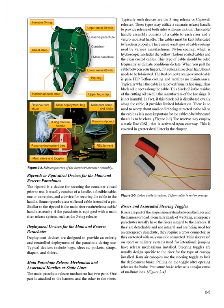Ripcords or equivalent devices. The ripcord is a device for securing the container closed prior to use. It usually consists of a handle, a flexible cable, one or more pins, and a device for securing the cable to the handle. Some ripcords use a stiffened cable instead of a pin. Similar to the ripcord is the main riser retained/release cable/handle assembly if the parachute is equipped with a main riser release system, such as the three-ring release. Deployment devices are designed to provide an orderly and controlled deployment of the parachute during use. Typical devices include bags, sleeves, pockets, straps, diapers, and sliders.